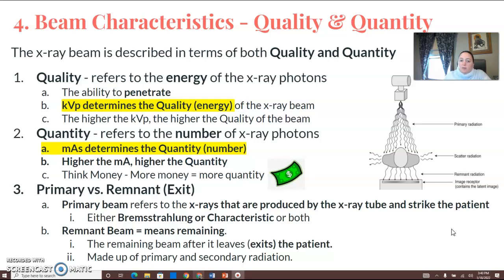Quantity refers to the number of x-ray photons, and that is determined by your MAS. So MAS determines quantity, which is the number of photons. If you use higher MA, higher the quantity.